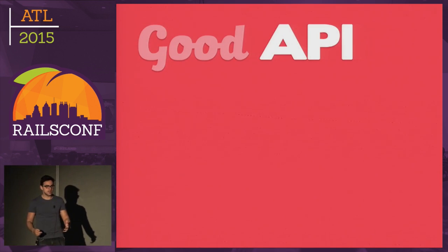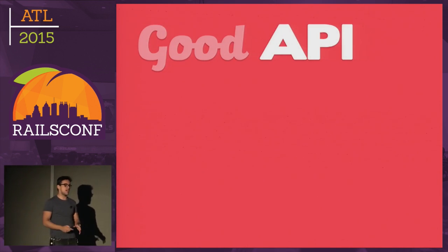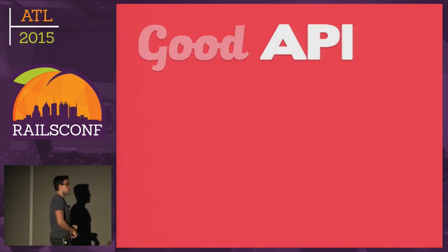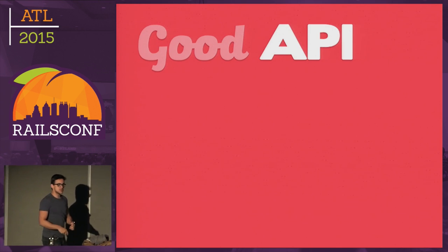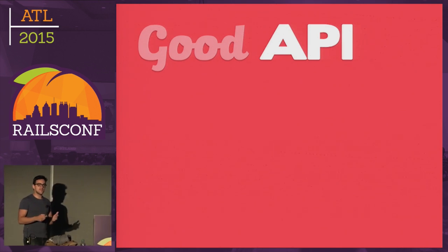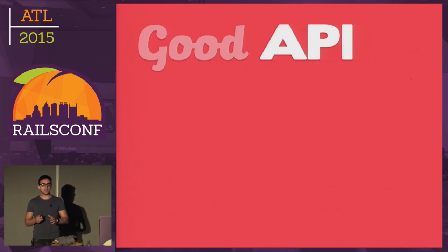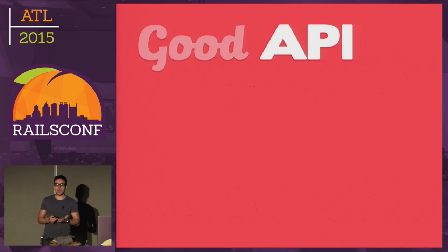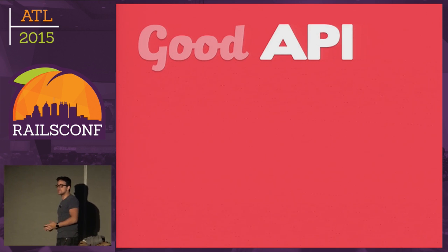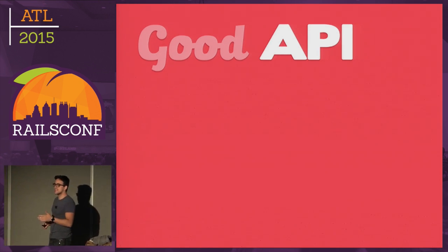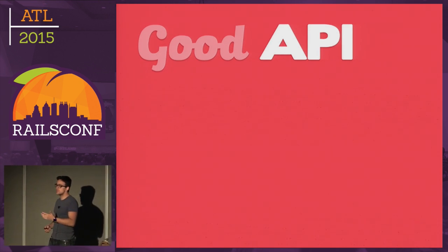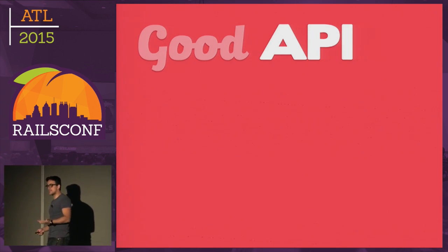But an API can also be one of the greatest liabilities of a company. If you don't write a good API, it will definitely come back to haunt you. You are going to have to invest money, time, and people to fix it — and you will probably deliver a worse experience for everyone integrating with you. So the question is: how do we build a good API?